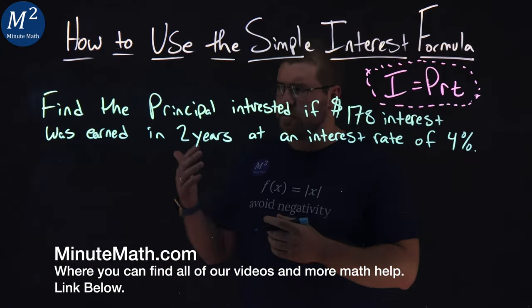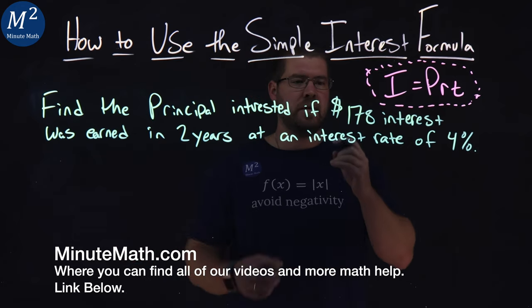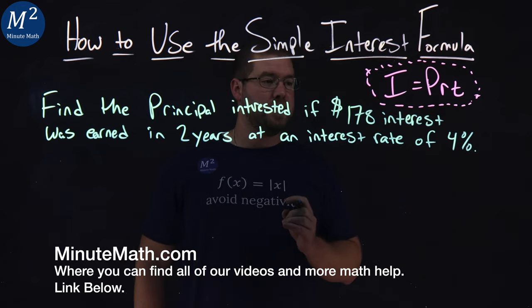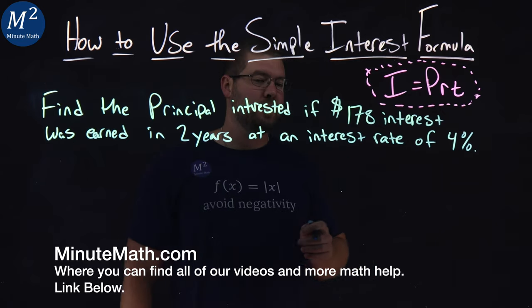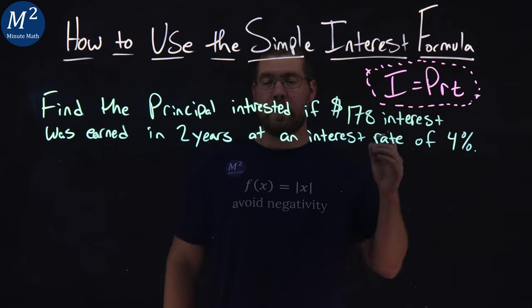We're given this problem right here. Find the principal invested if $178 in interest was earned in two years at an interest rate of 4%.